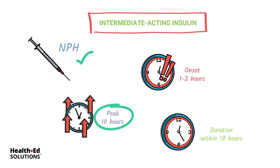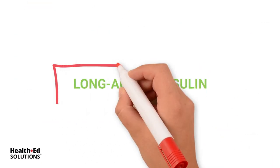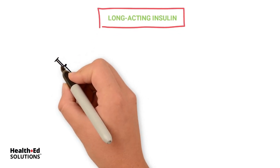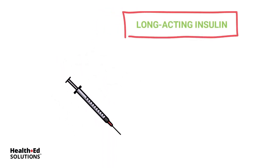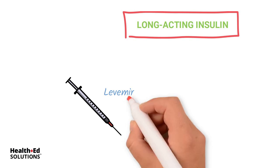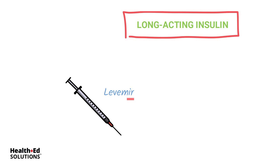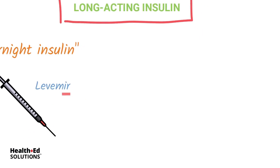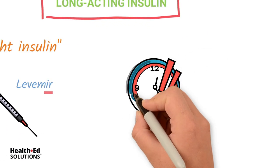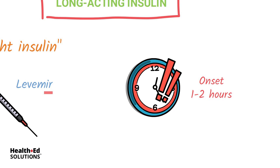Finally, our long acting — Levemir. Anytime you see an insulin ending in IR or 'mir,' it is a long acting insulin. This is the type of insulin that night shift nurses give at night to protect the patient overnight from hyperglycemia. All insulin onsets are pretty similar — they all start working within about the same amount of time.